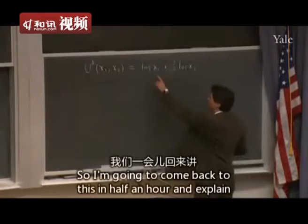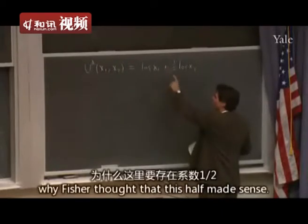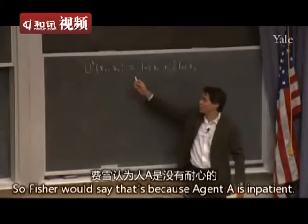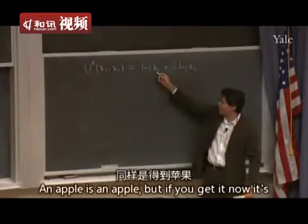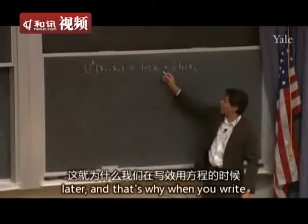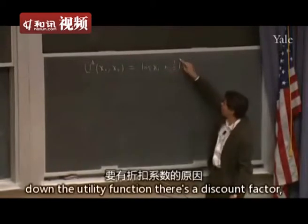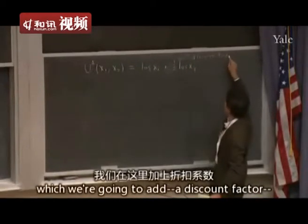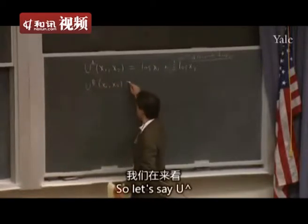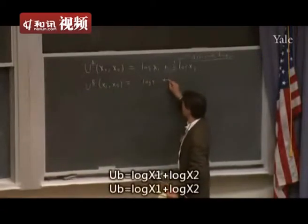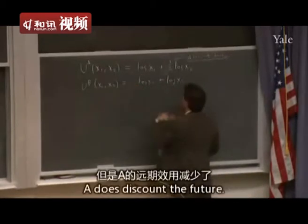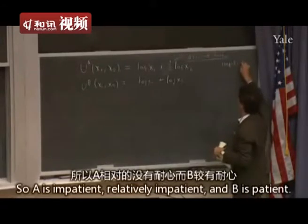Agent A thinks a lot more of good one than good two. Fisher would say that's because agent A is impatient — an apple is an apple, but if you get it now it's worth more to you, giving you higher utility than getting an apple next year. This is a law of human nature, he claimed. That's why when you write down the utility function, there's a discount factor which reduces the utility you get from future consumption. Let's say U_B of X1 and X2 equals log X1 plus log X2. So B is more patient than A — B doesn't discount the future, while A does. A is relatively impatient and B is patient.